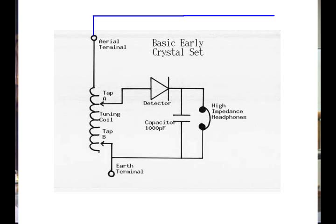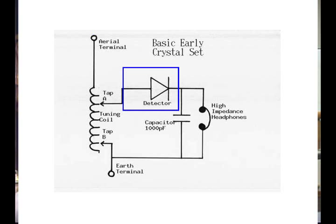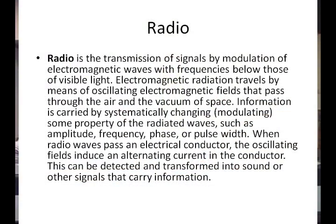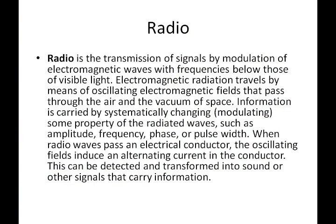I'm tapping here to adjust my tuning. The signal goes through a diode, which converts AC into DC. It's then filtered by a capacitor, leaving just an audio waveform that drives a high-impedance headphone, converting the signal into sound. Notice there are no batteries — this is completely driven by the signal from the air.